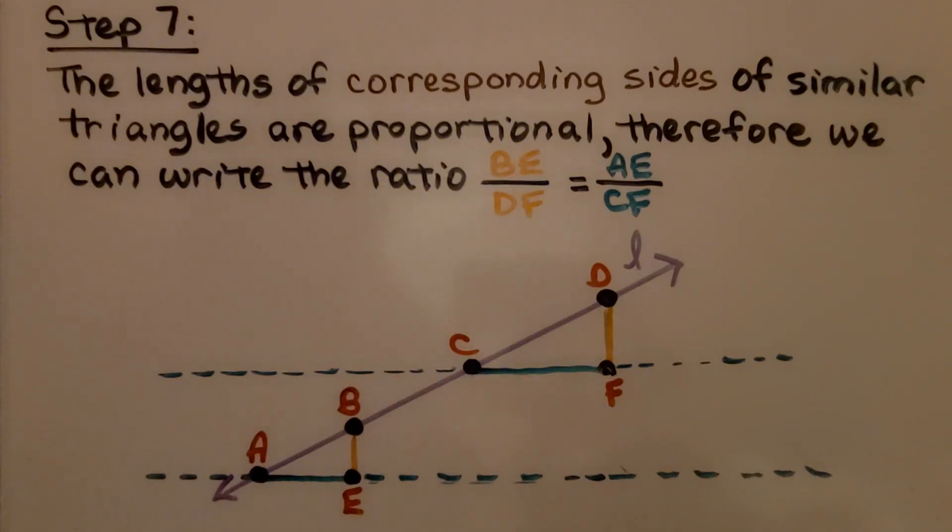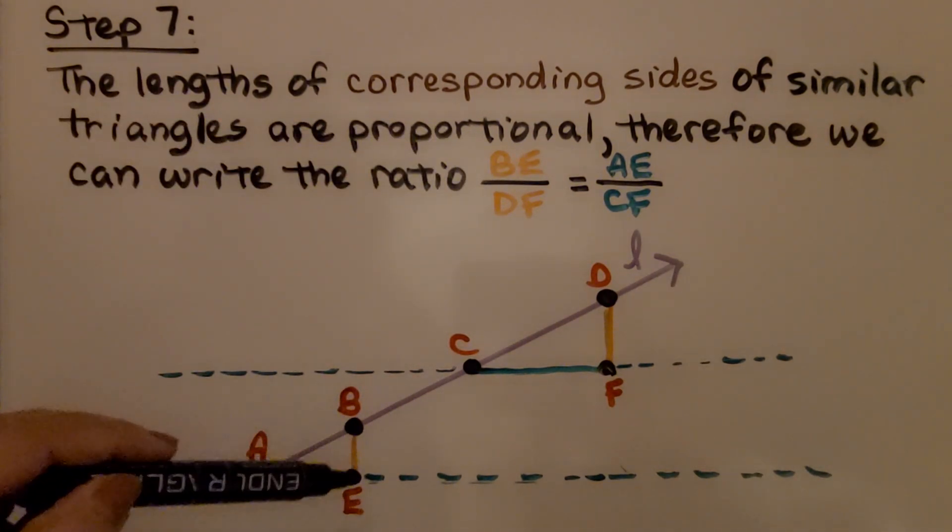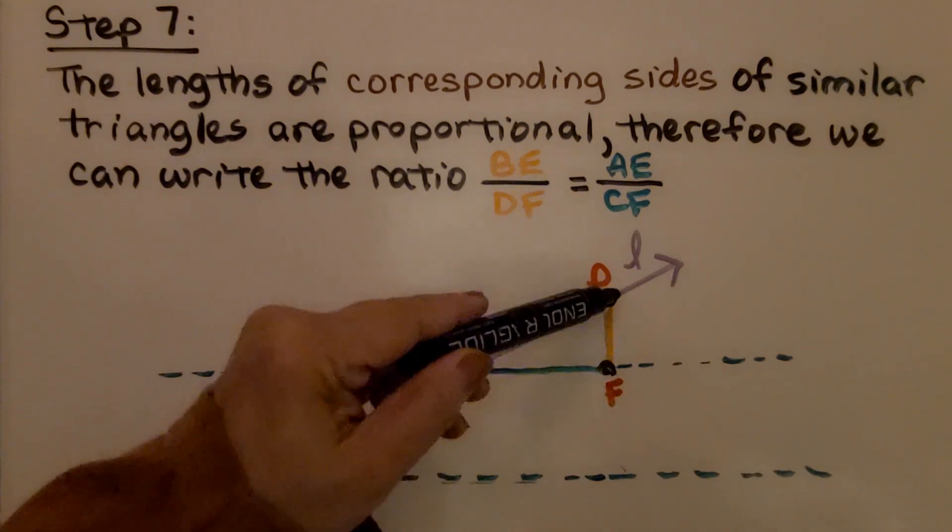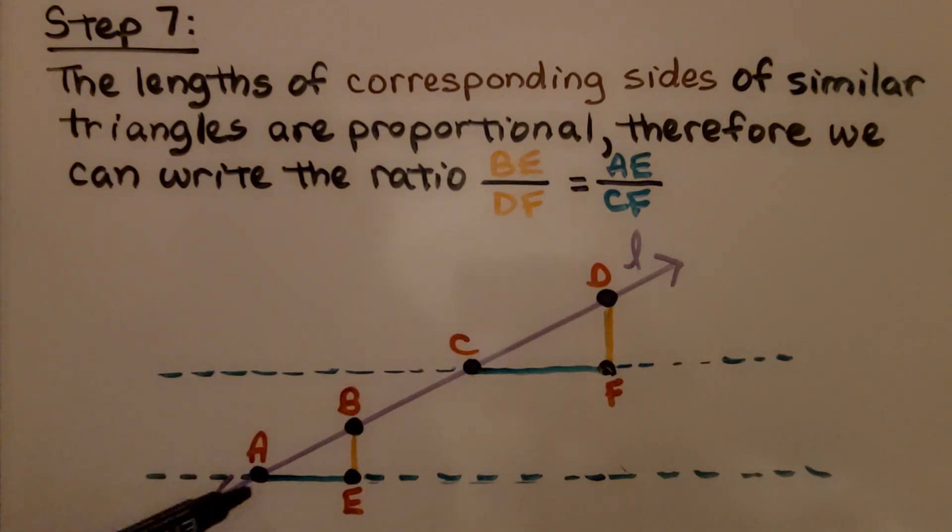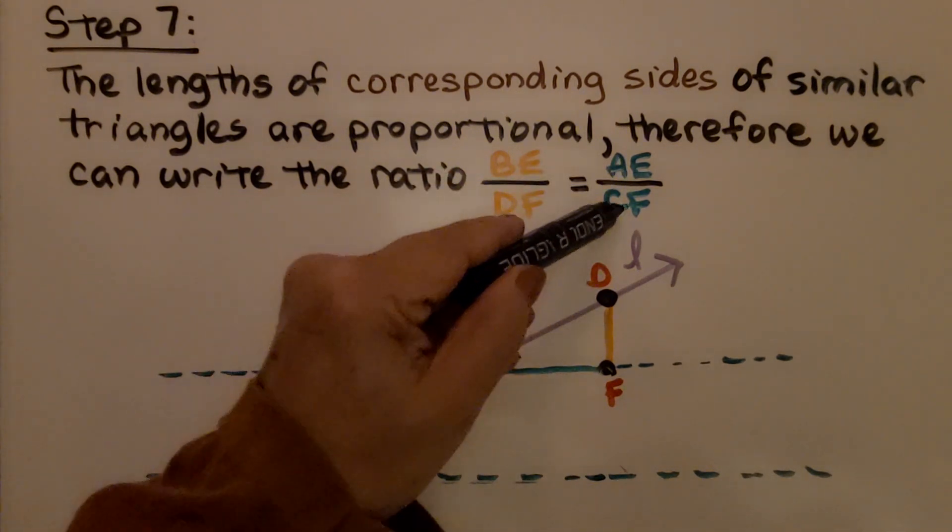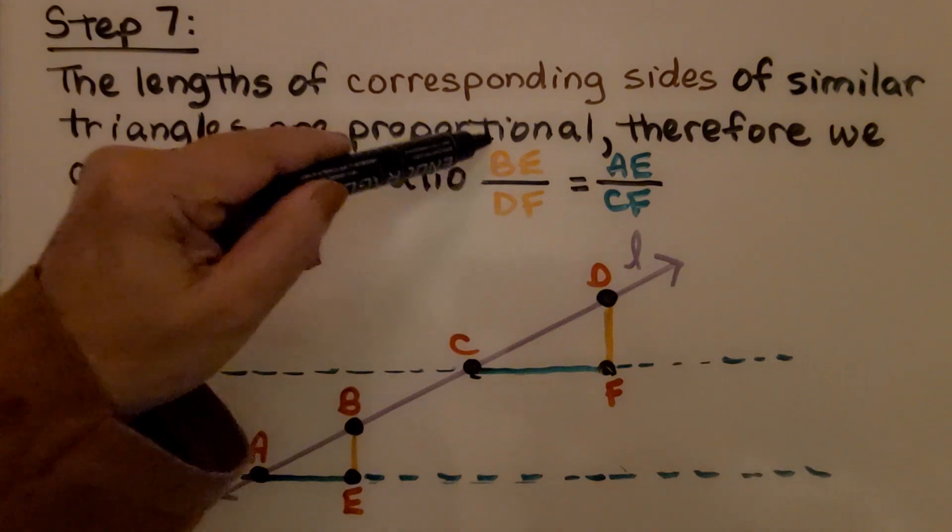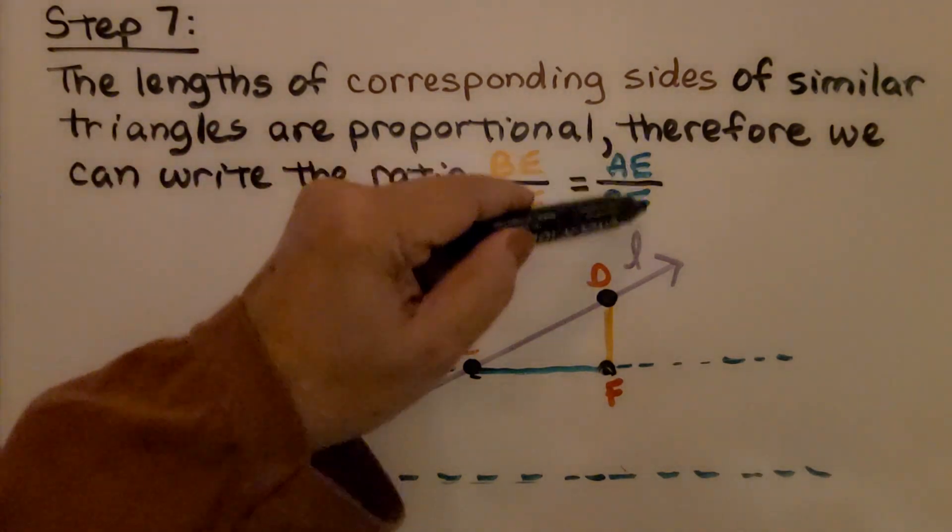Step seven, the lengths of corresponding sides of similar triangles are proportional. Therefore, we can write the ratio of BE, this rise, over DF, this rise. And we can write AE, this run, over CF, this run. Carefully look at this, we have the two rises and we have the two runs.